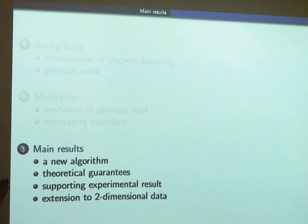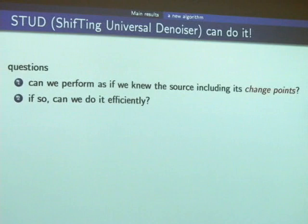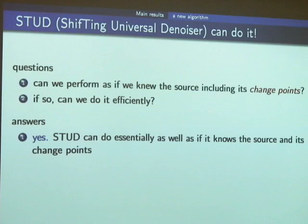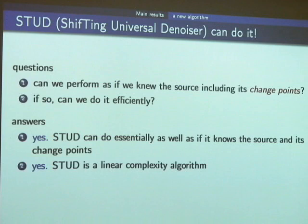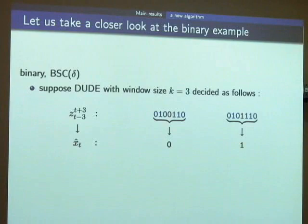Now for the main results. The new algorithm STUD — Shifting Universal Denoiser — can do better than DUDE for varying sources. It can perform as if it knows the source and where it changes, and it does so with linear complexity. The key point is that STUD can universally attain the optimum denoising performance, provided that it is at all attainable. To see how STUD works, let's look at the binary example: bits are flipped with probability delta independently.